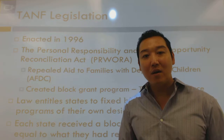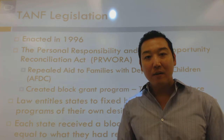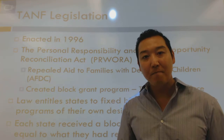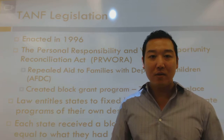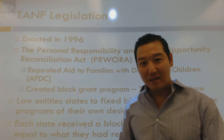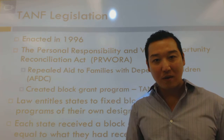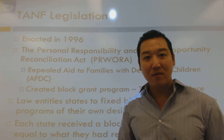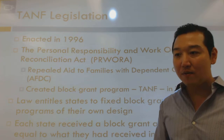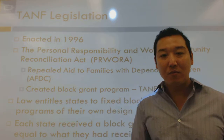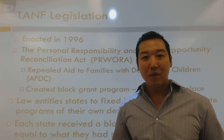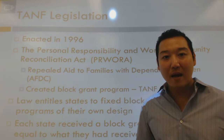Clinton passed the Personal Responsibility and Work Opportunity Reconciliation Act — PRWORA — in 1996, for his second term. It replaced our welfare system, replacing AFDC with a program called TANF, Temporary Assistance for Needy Families. TANF replaced the old system, which was an entitlement program — you could receive welfare benefits as long as you needed them, with no time limit on the amount of assistance you received from the federal government.